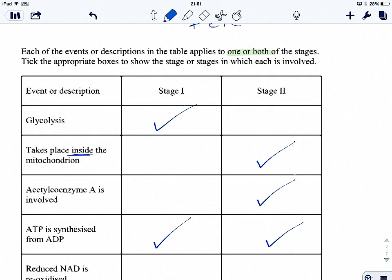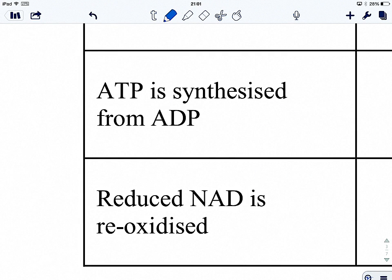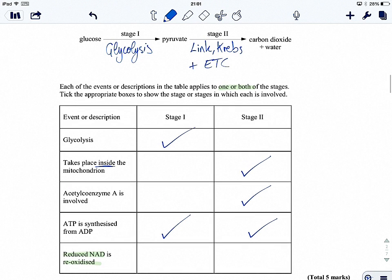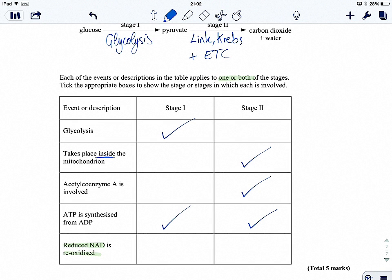And then finally, this is the one that sometimes foxes people. Reduced NAD is re-oxidized. So it's the reduced coenzyme being converted back into NAD. Now, in glycolysis, NAD is reduced, so it's not there. In link, nothing exciting there. In Krebs, NAD is still reduced, but then at the electron transport chain, reduced NAD is oxidized, so it's stage two.